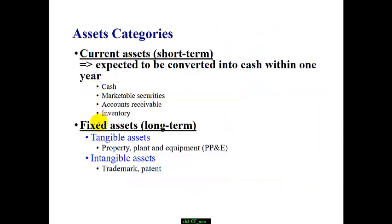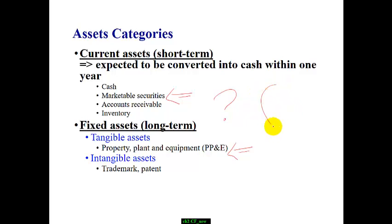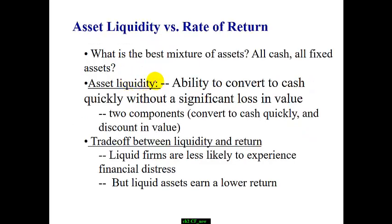We have different kinds of assets — some are current assets, some are fixed assets, some are short term, some are long term. So what is the best mixture of assets? Should we put more into the liquid ones or more into the fixed assets? What are the trade-offs and things we have to pay attention to when we decide the best mixture? Cash tends to be quite liquid. When we talk about asset mixture, we want to consider asset liquidity.